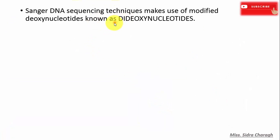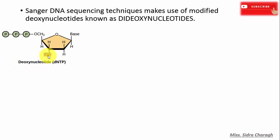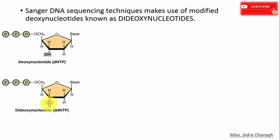Sanger DNA sequencing makes use of modified deoxynucleotides known as dideoxynucleotides. If you look at the chemical structure of a regular deoxynucleotide, you can see a three prime hydroxyl group is present on the sugar, and this three prime OH group participates in phosphodiester bond formation during DNA synthesis. In a dideoxynucleotide, the three prime hydroxyl group is absent — instead there is a hydrogen at that position.